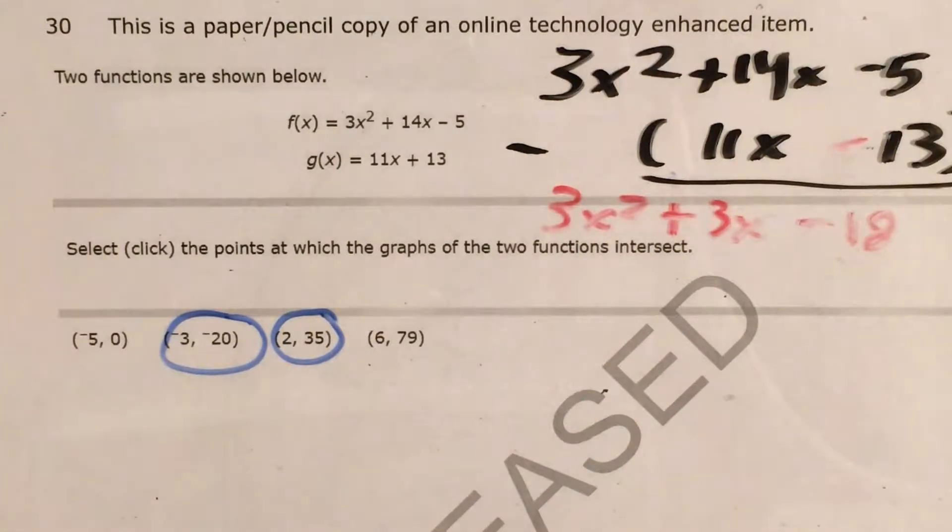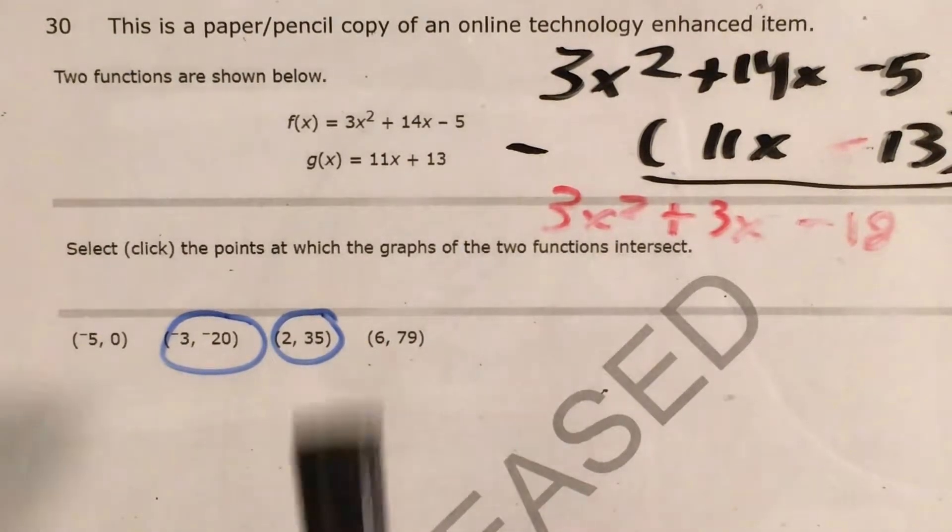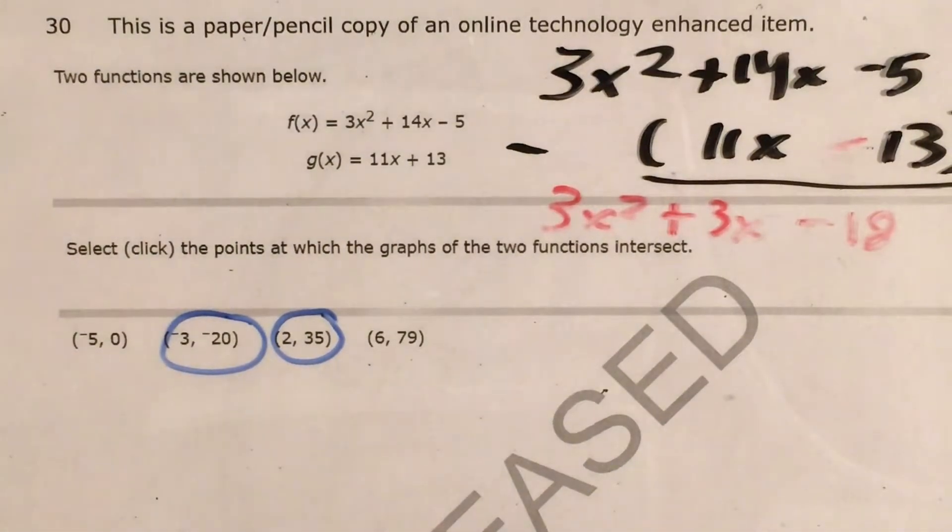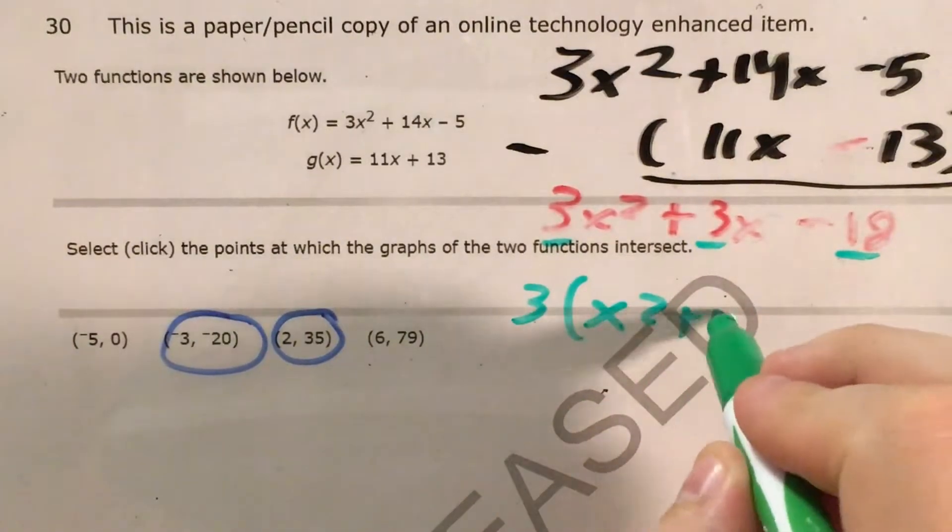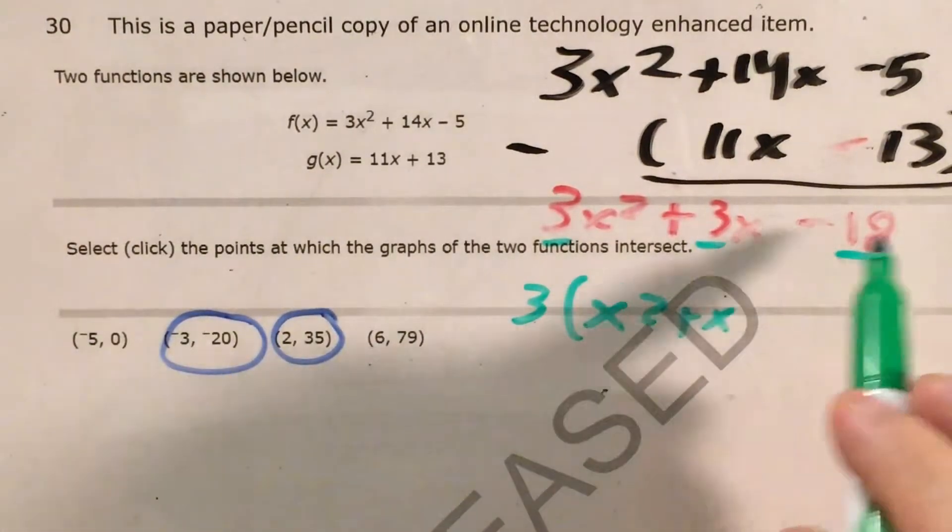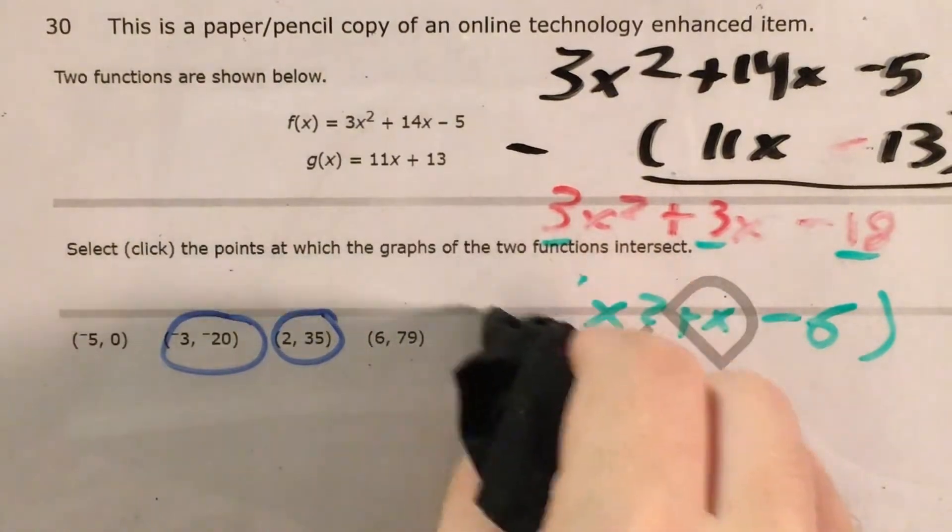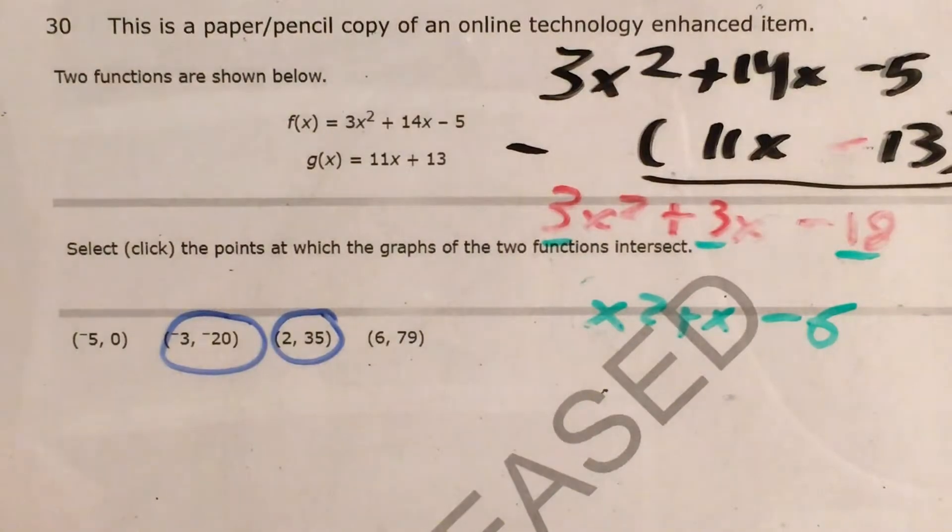And now that I have the difference between these two, I can go ahead and factor this, because the zeros of this expression are actually going to give me the same x values as the solutions to this. So if I want to go ahead and factor this, I'm going to start by looking at my coefficients and seeing if I can find a common number factor that I can pull out, and that's actually going to be 3. So this is 3 times x squared plus x minus 6.